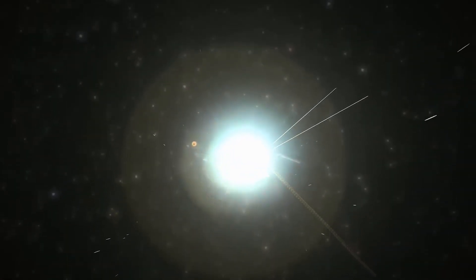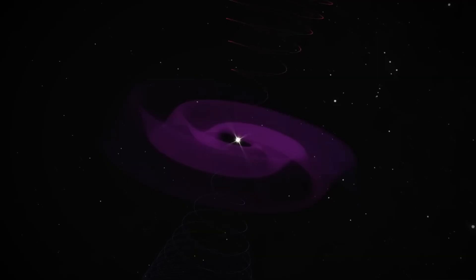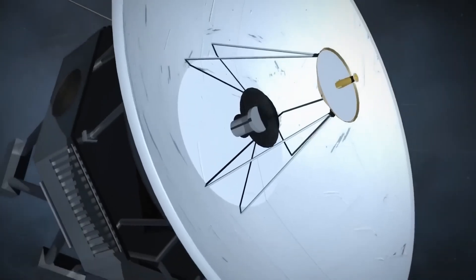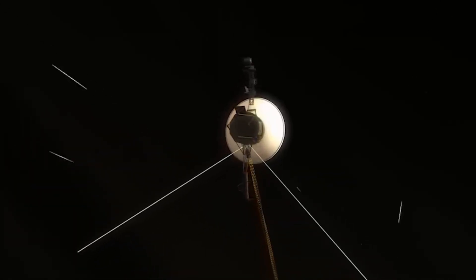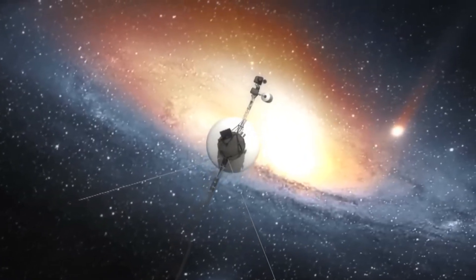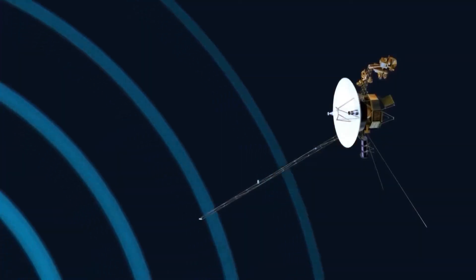Among the most eerie revelations of Voyager's recent data is the realization that silence does not exist out there. While our telescopes can't see anything in these regions, Voyager hears them. Its plasma wave sensors have picked up continuous low-frequency sounds, steady oscillations that never cease. Some of these frequencies seem to vary slightly as the spacecraft moves, as if it's entering new zones of vibration.